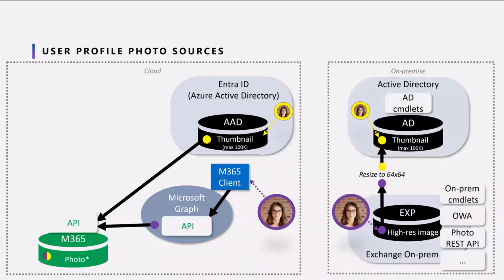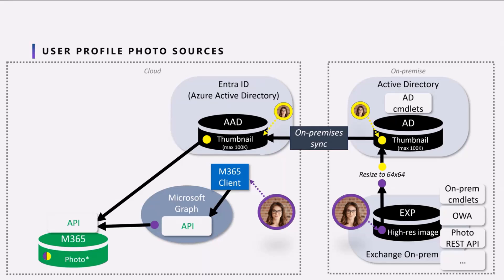For on-premise enterprise users, photos can be uploaded to Exchange on-premise or Active Directory. The Exchange on-premise photos are resized, then synced to Azure Active Directory. For enterprise users that have an on-premise and a cloud presence synced through on-premise sync, the Active Directory photo will be synced over to Entra ID. The photo that will be seen on the cloud would be the latest updated — so that would be either from on-prem or from the cloud. One important point is that there is a one-way only sync from on-premise to cloud, which means that cloud photo updates won't propagate back to on-premise.